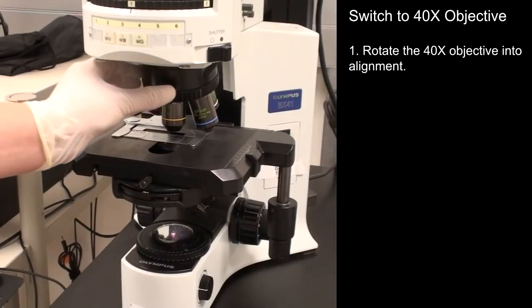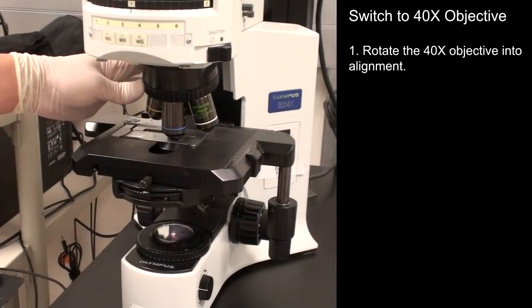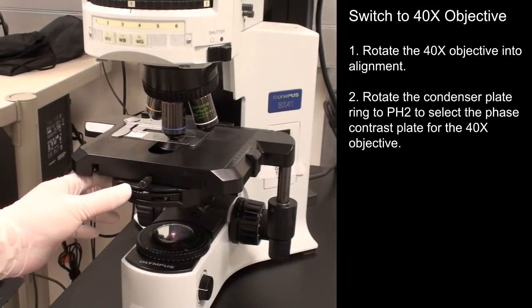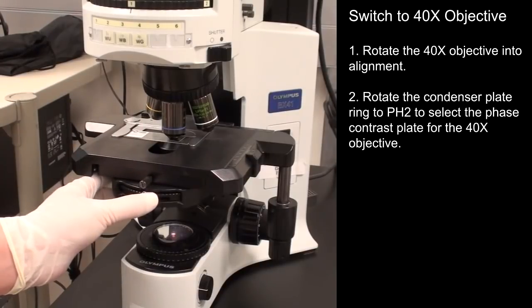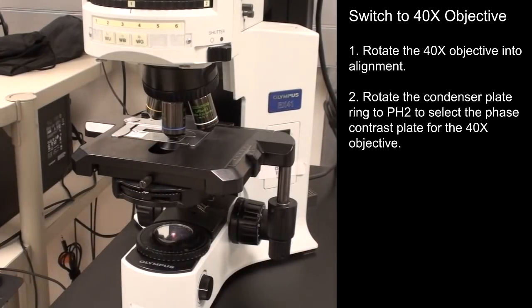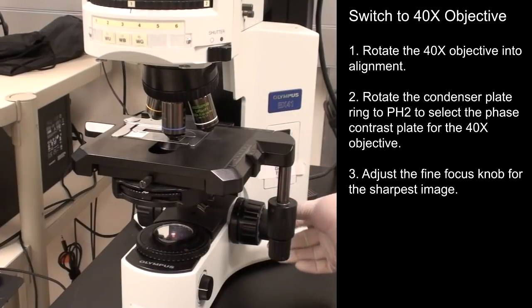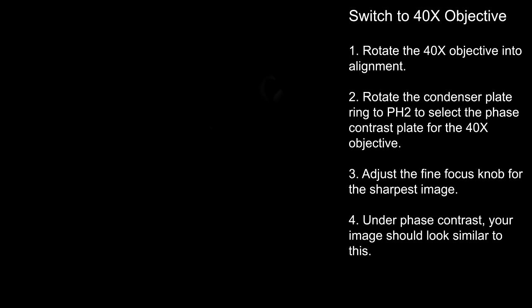Rotate the 40x objective into alignment. Rotate the condenser plate ring to PH2 to select the phase contrast plate for the 40x objective. Adjust the fine focus knob for the sharpest image. Under phase contrast, your image should look similar to this.